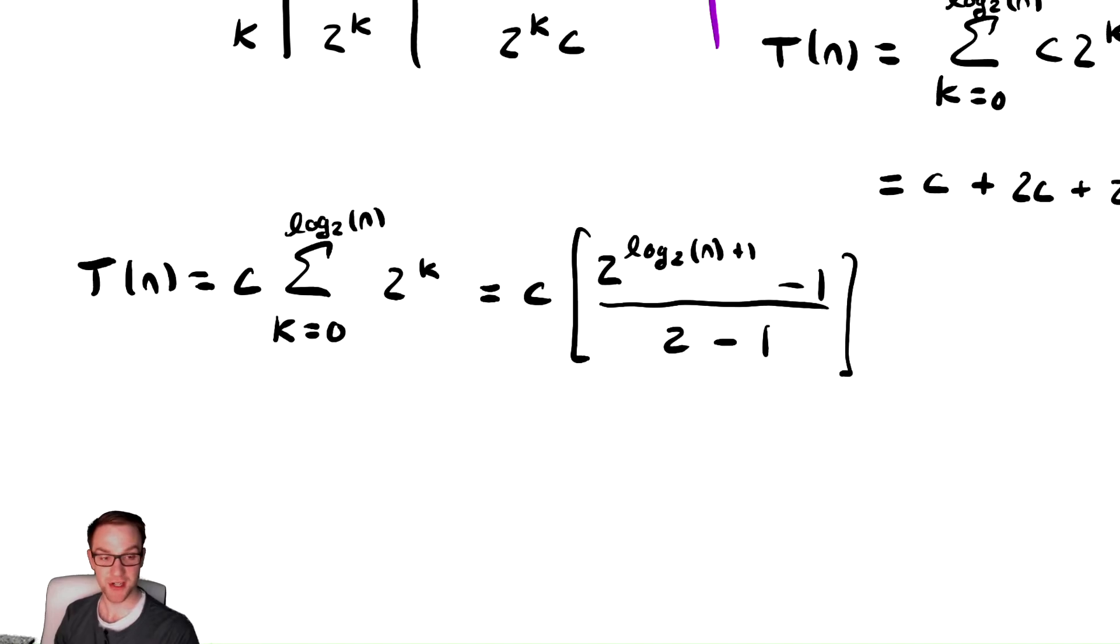And now I have a closed form expression, we just need to do whatever algebra to funge that thing around and make it actually work out nicely. 2 minus 1, that's real convenient, that's just 1, so we have c times 2 to the log base 2 of n times 2 to the 1 minus 1, by using our exponent rules.